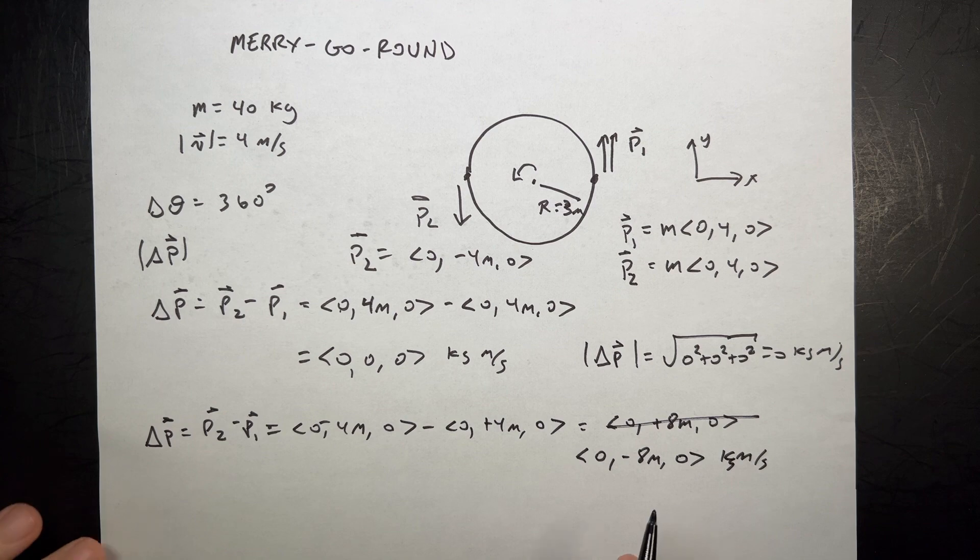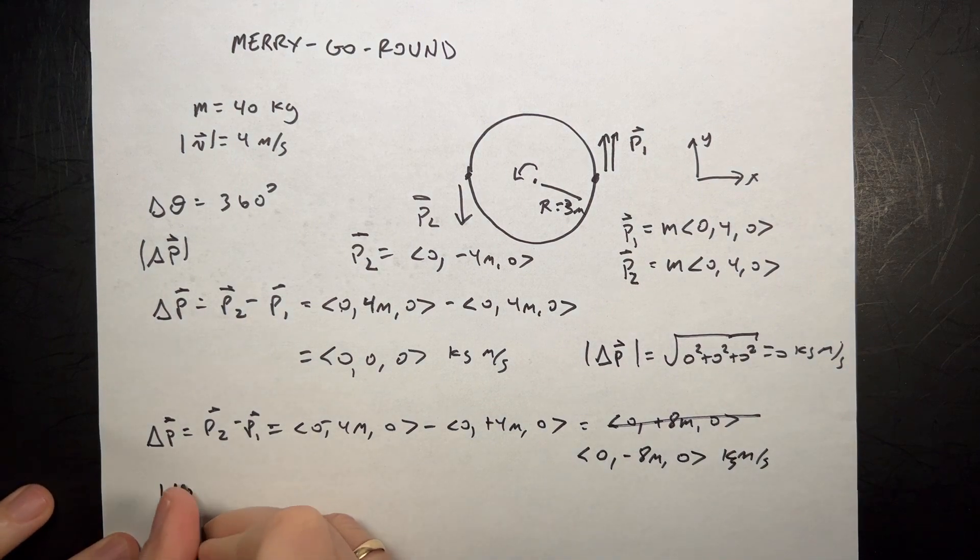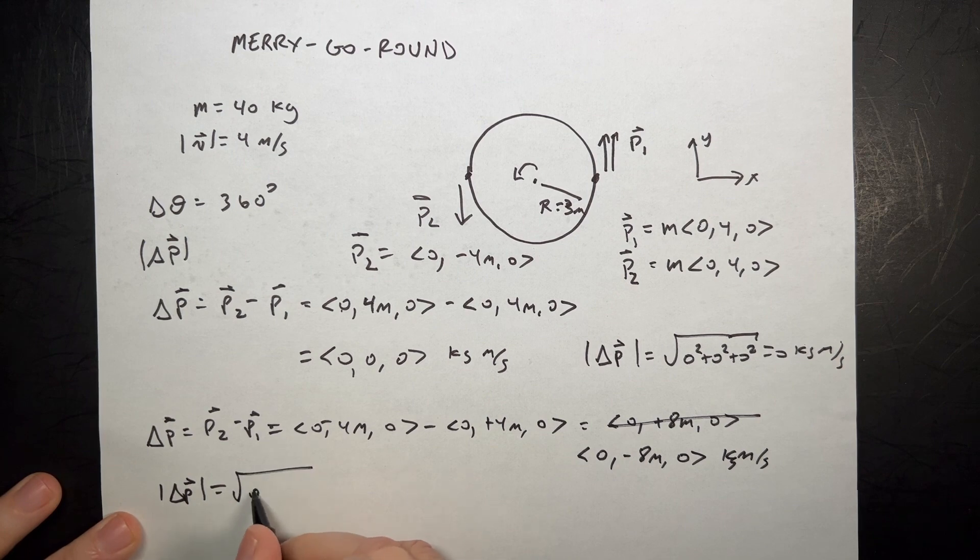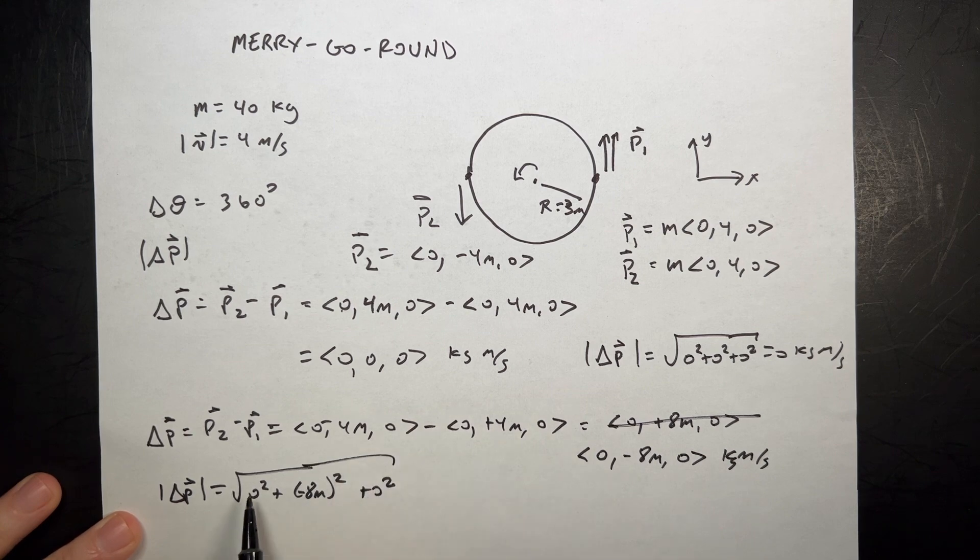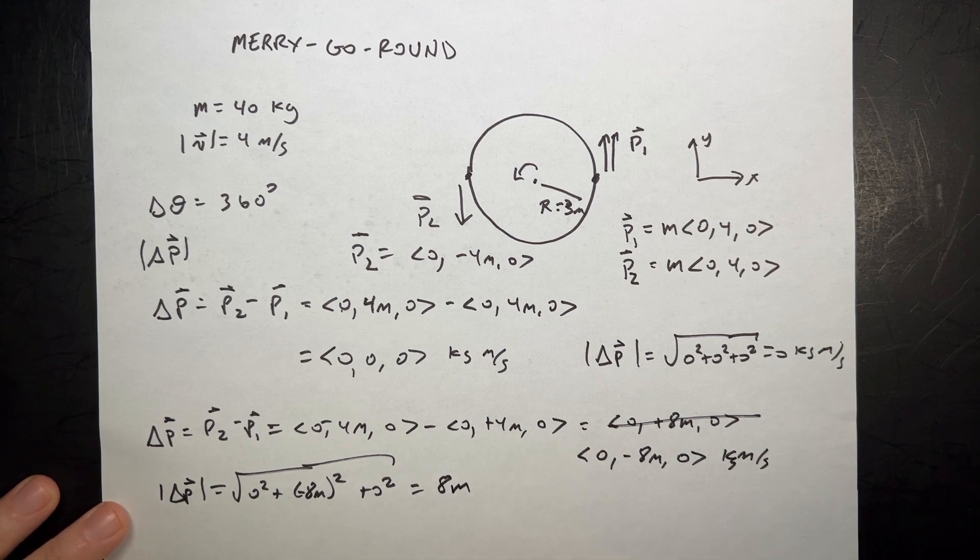Now I want to find the magnitude of this. The magnitude of the change in momentum is going to be equal to the square root of 0 squared plus negative 8m squared plus 0 squared. So I get 0, 8m squared, 0. And I take the square root, I get 8m. And that's that. 8m.